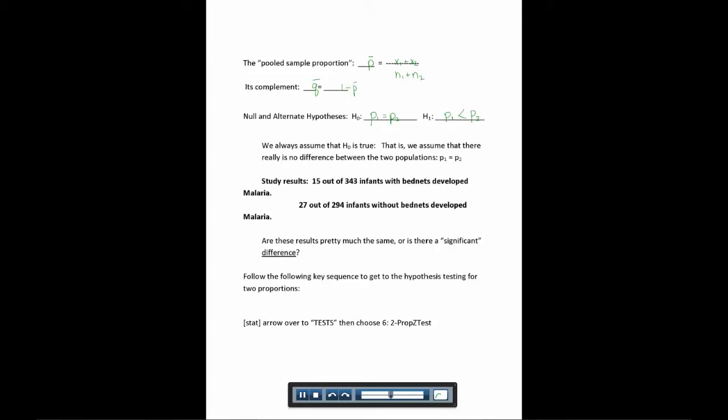So here's our study results. 15 out of 343 infants with bed nets develop malaria. So that 15 is our X1, and the 343 is our N1. And 27 out of 294 infants without bed nets develop malaria. So that's our X2 and our N2.